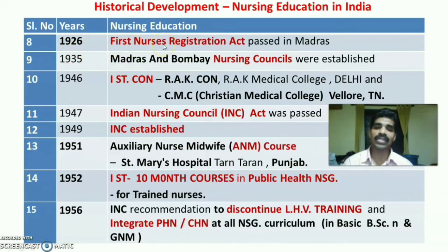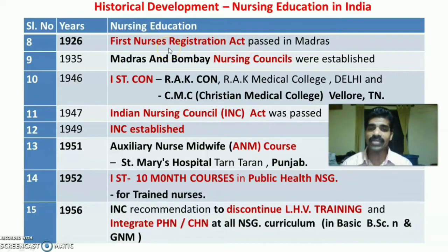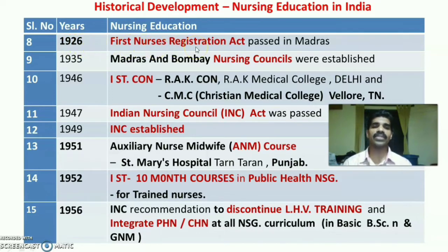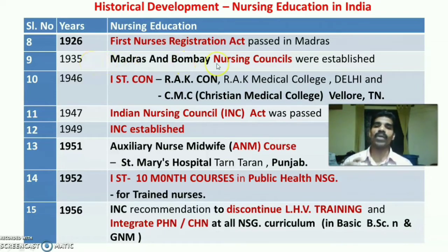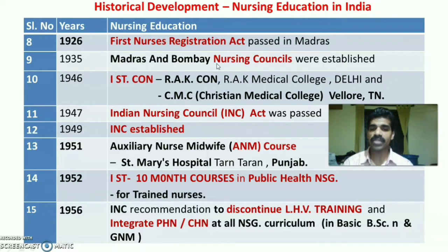In 1926, the first Nurses Registration Act was passed in Madras, making it the first state in the country to start a Nurses Registration Act. Then in 1935, the first nursing councils were established in both Madras and Bombay for the registration of trained nurses.